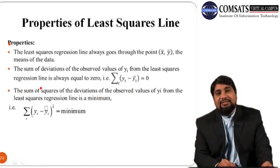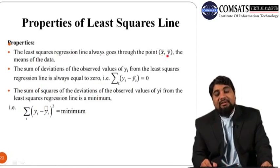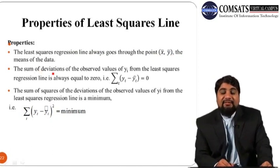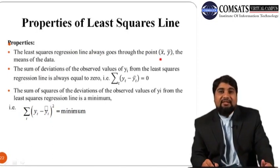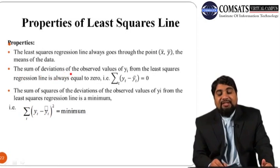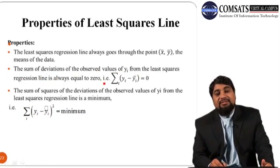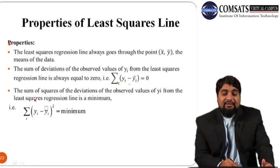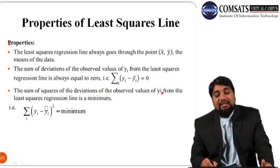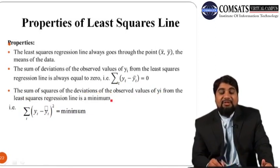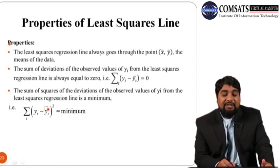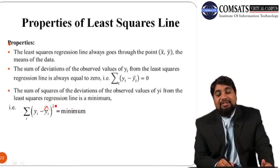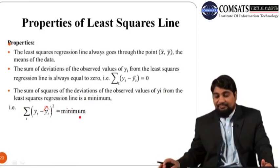The properties of the least squares line are: the least squares regression line always passes through the point (x-bar, y-bar), the means of the data. The sum of deviations of observed yi values from the least squares regression line equals zero — summation(y minus y-hat) = 0. The sum of squares of deviations of observed y values from the least squares regression line is a minimum — summation(y minus y-hat)² is minimized.